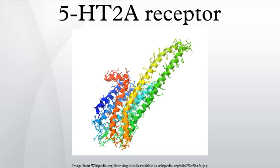Distribution: 5-HT2A is expressed widely throughout the central nervous system. It is expressed near most of the serotonergic terminal-rich areas, including the neocortex and the olfactory tubercle. Especially high concentrations of this receptor on the apical dendrites of pyramidal cells in layer V of the cortex may modulate cognitive processes, working memory, and attention by enhancing glutamate release, followed by a complex range of interactions with the 5-HT1A, GABAA, adenosine A1, AMPA, mGluR2/3, mGlu5, and OX2 receptors.